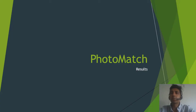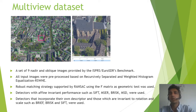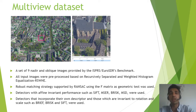Now I would like to outline some of the results of Photomatch, starting with the multi-view dataset. Using nine nadir and oblique images provided by the ISPRS EuroSDR benchmark, all input images were preprocessed based on recursively separated and weighted histogram equalization. This preprocessing strategy was chosen because it preserves image brightness more accurately and produces images with better contrast enhancement. Robust matching strategies supported by RANSAC using the fundamental matrix and geometrical tests were applied. Detectors with often invariant performance such as SIFT, MSER, BRISK, and MSD were used, along with detectors that incorporate their own descriptor and those invariant to rotation and scale such as BRIEF, BRISK, and SIFT.